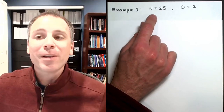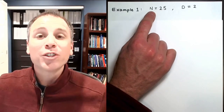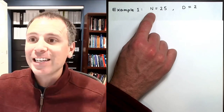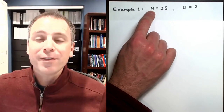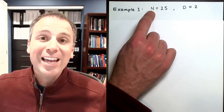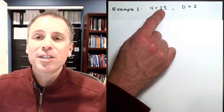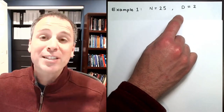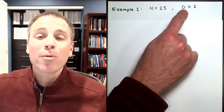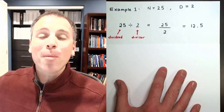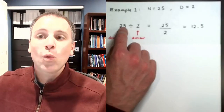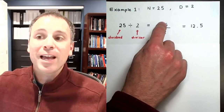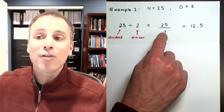Let's take a look at an example. We'll choose two non-negative unsigned integers. We'll choose a dividend — also known as the numerator — of 25. And for the divisor — another way to say that is denominator — we'll choose the number two. We know from mathematics that 25 divided by two is the same thing as 25 over two.